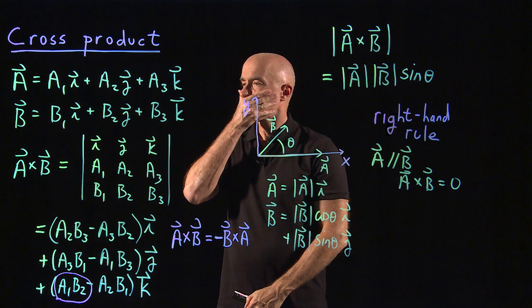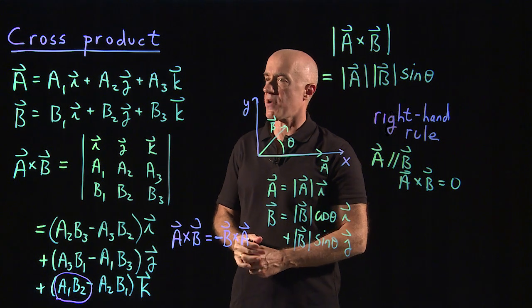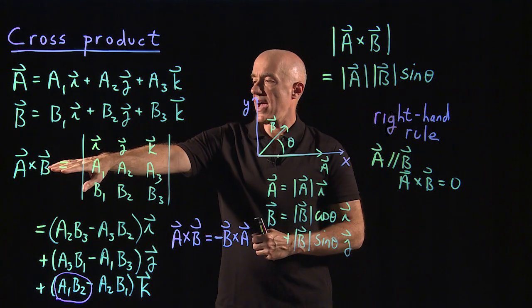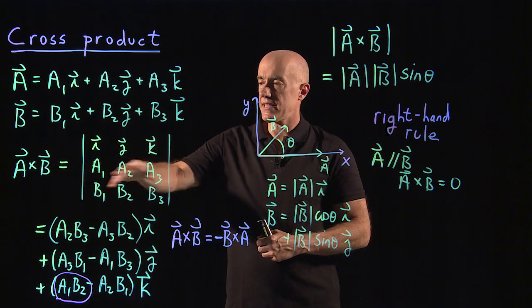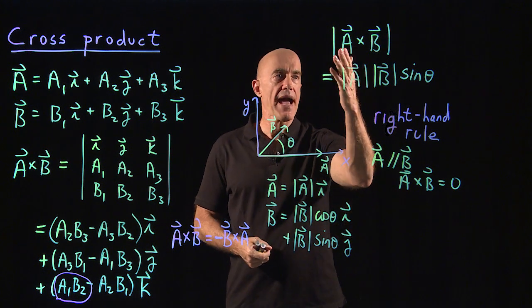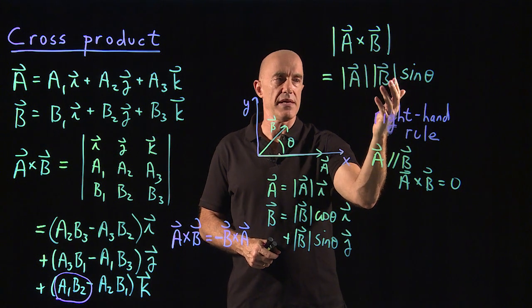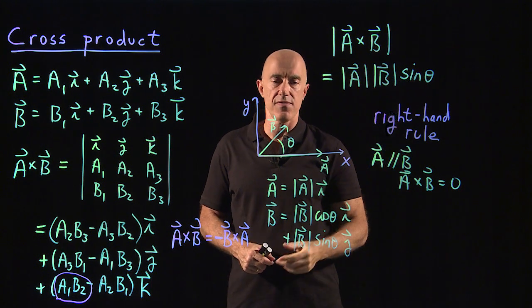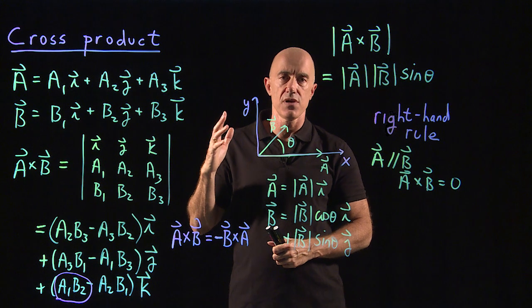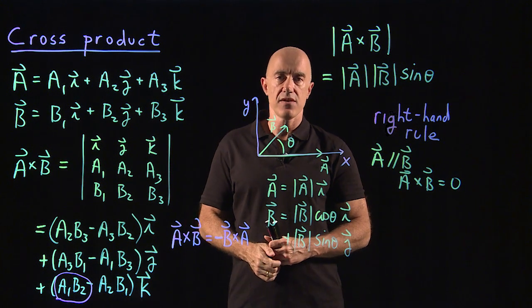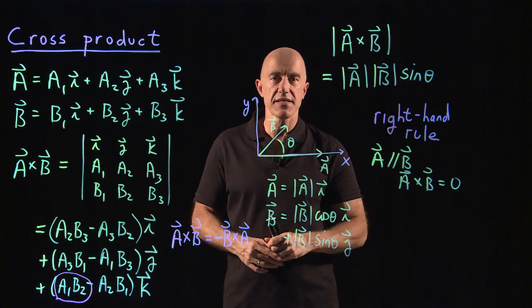The cross product is sometimes called a vector product because it gives you a vector. You can compute a cross b from the 3 by 3 determinant — that's how you remember the cross product. The magnitude of a cross b is the length of a times the length of b times the sine of the angle between them. Finally, you use the right-hand rule to determine the direction of a cross b. I'm Jeff Chasnoff, thanks for watching, and I'll see you in the next video.